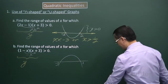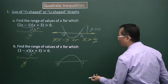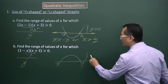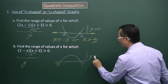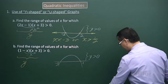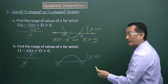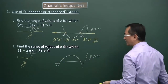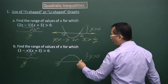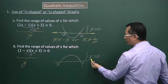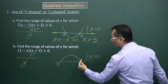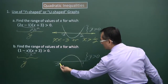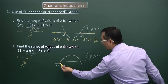These two factors in a product really represent Y, so I will have Y greater than zero — the portion of the graph which is above the horizontal line. You can see the corresponding X values for Y greater than zero are all the X values between negative three and one.